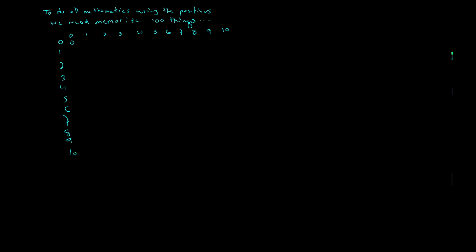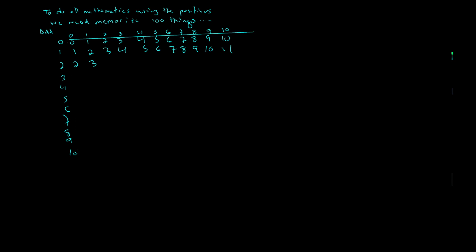If I do an addition table, zero plus these numbers gives those numbers back. One plus these numbers, two plus these numbers — and so if I look at the number in the row and add it to the number in the column, my answer is directly below it. So two plus two is four, two plus three is five. This is the tables, and a lot of us have learned these with flashcards or other systems.